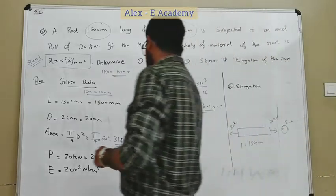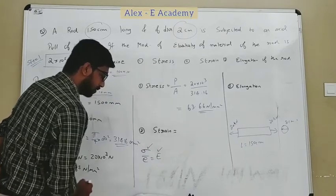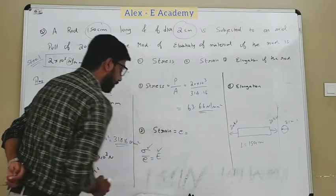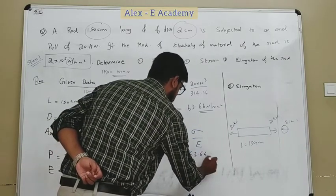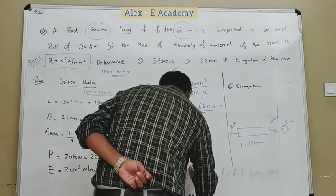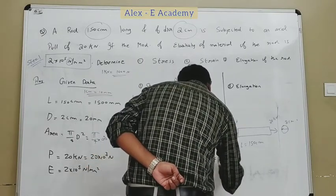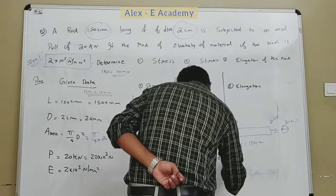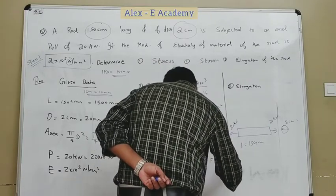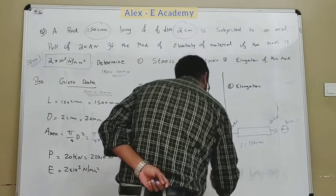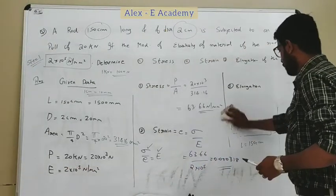Now we are going to find strain. According to Hooke's law, stress by strain is equal to Young's modulus E. So strain is equal to sigma by E — that is 63.66 divided by 2 into 10 raised to 5. The strain will be 0.000318.